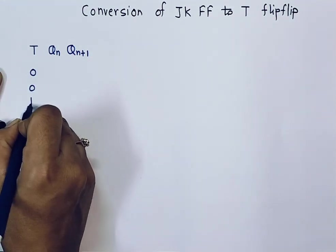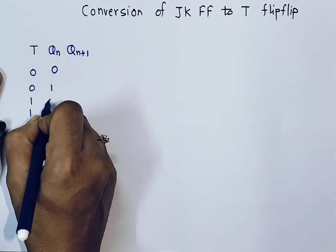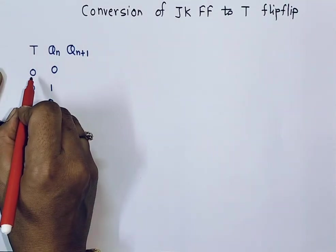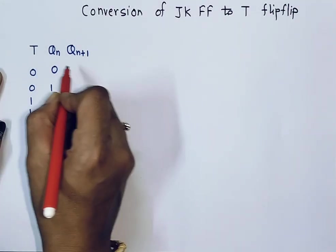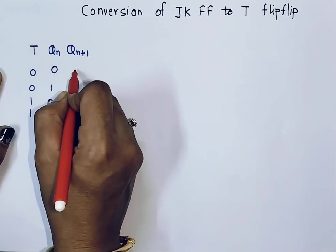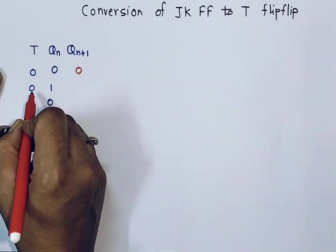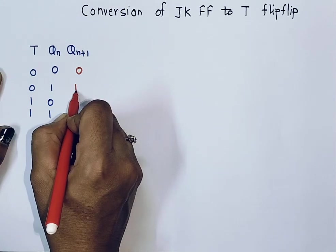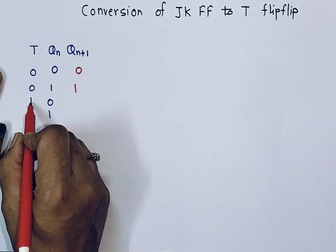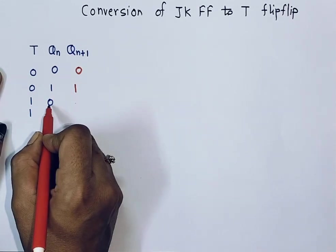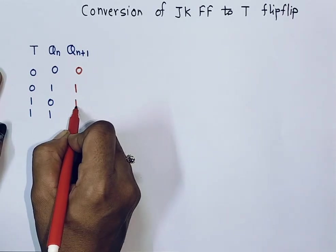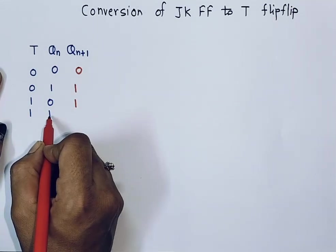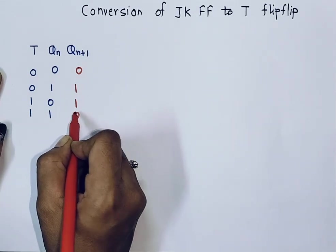The truth table rows are: T=0, Qn=0; T=0, Qn=1; T=1, Qn=0; T=1, Qn=1. When T input is 0, next state output is same as present state output — so if present state is 0, next state is also 0, and if present state is 1, next state is 1. When T input is 1, next state output is complement of present state — so complement of 0 is 1, and complement of 1 is 0.